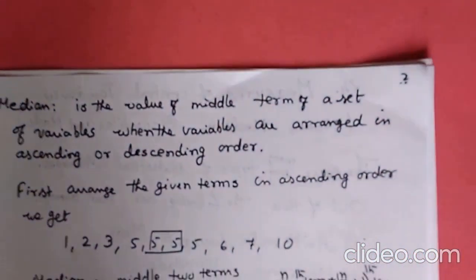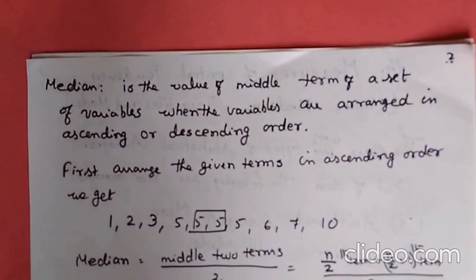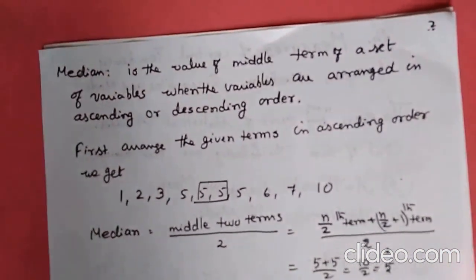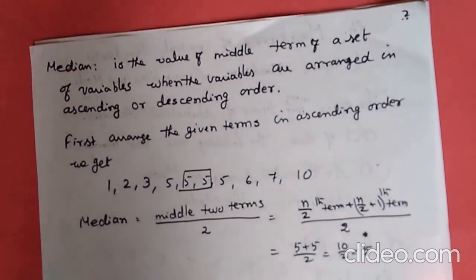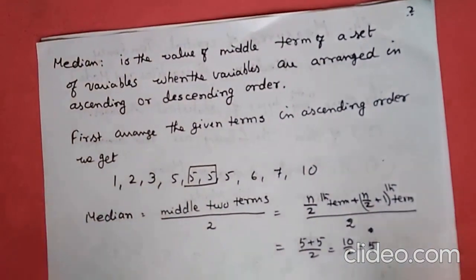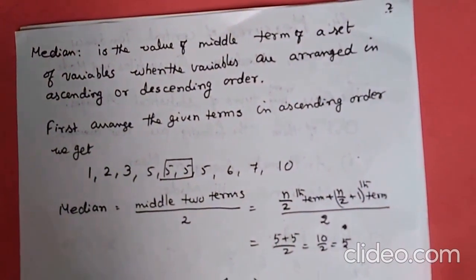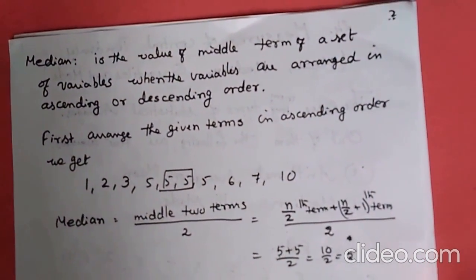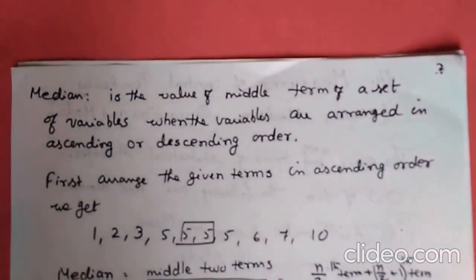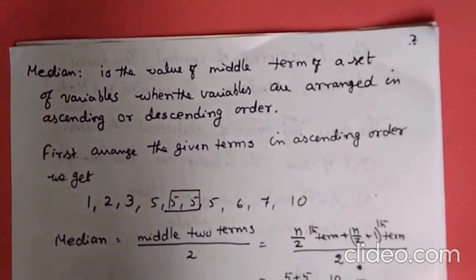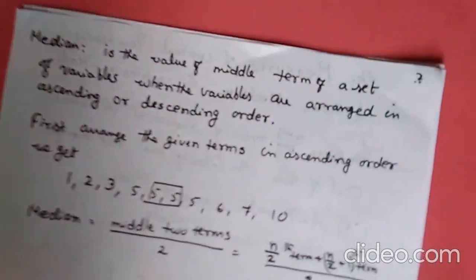The third one is median. Median is the value of the middle term of a set of numbers or variables when the variables are arranged in ascending or descending order. For mode and mean, it is not necessary to arrange the numbers. But for median, you have to arrange the numbers in ascending or descending order and find the middle term.